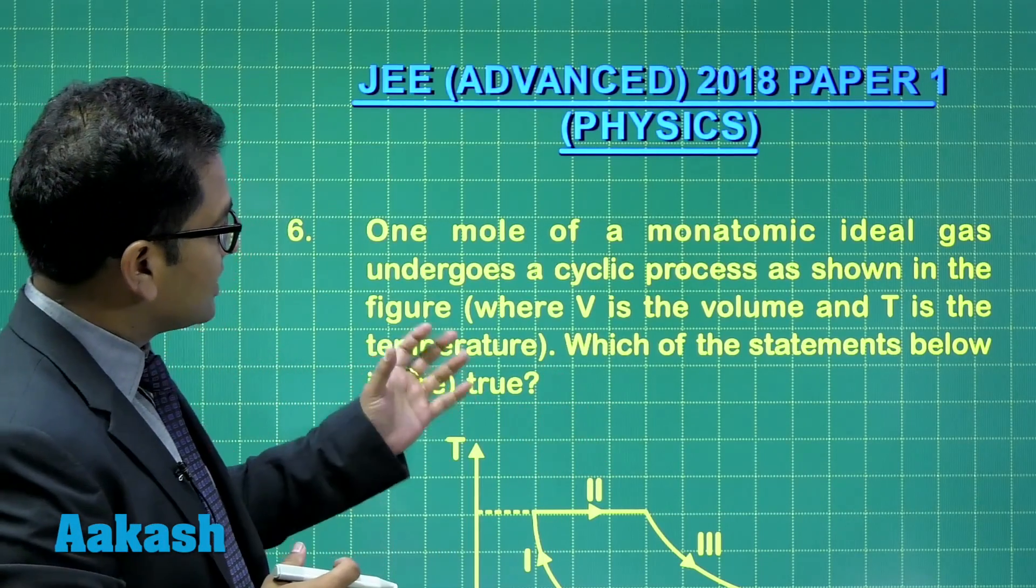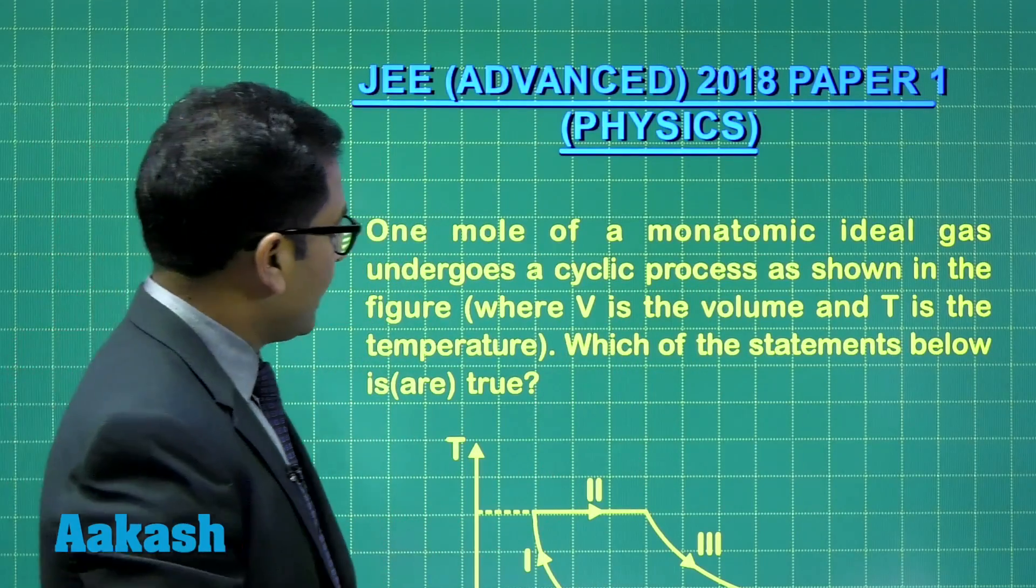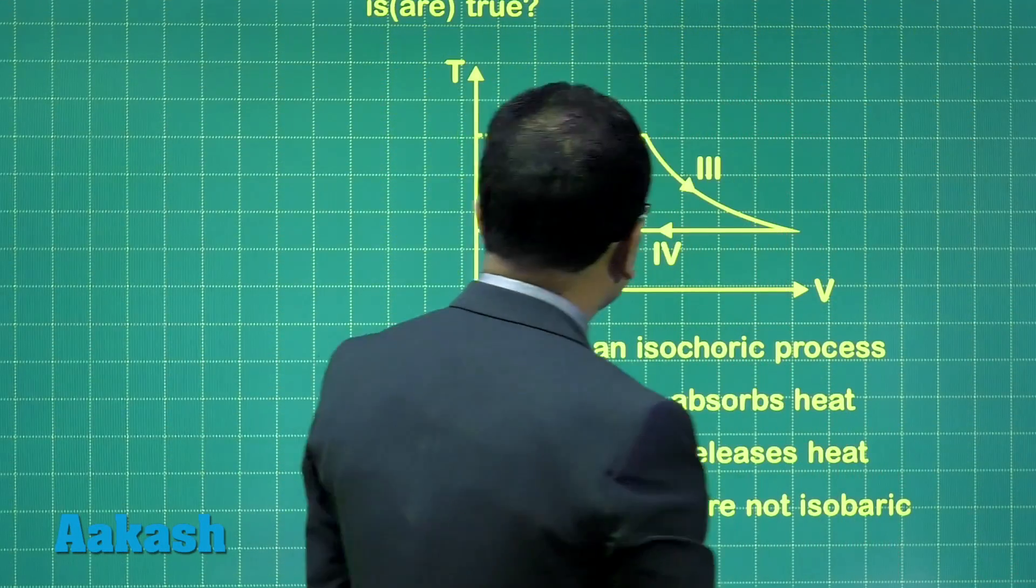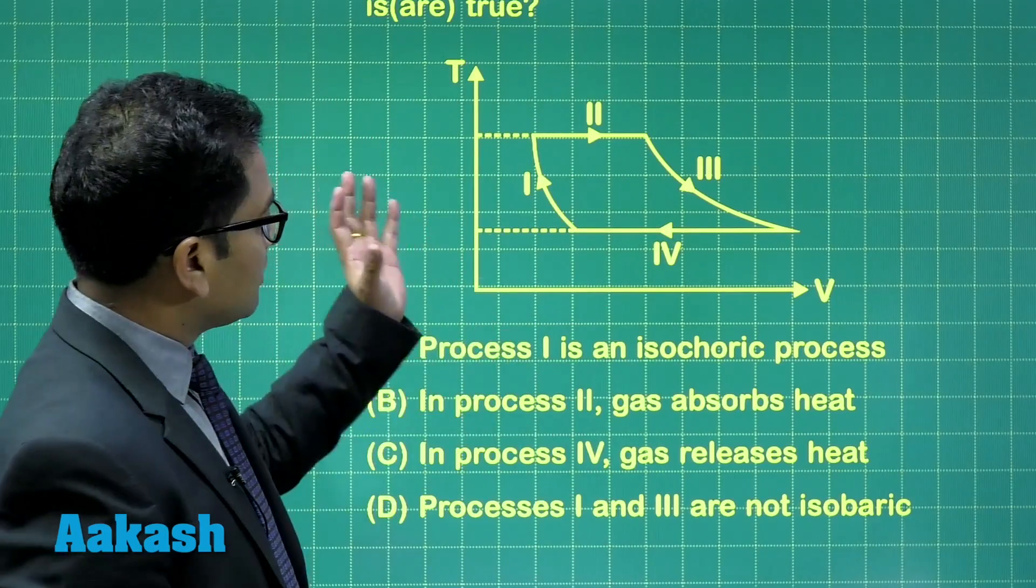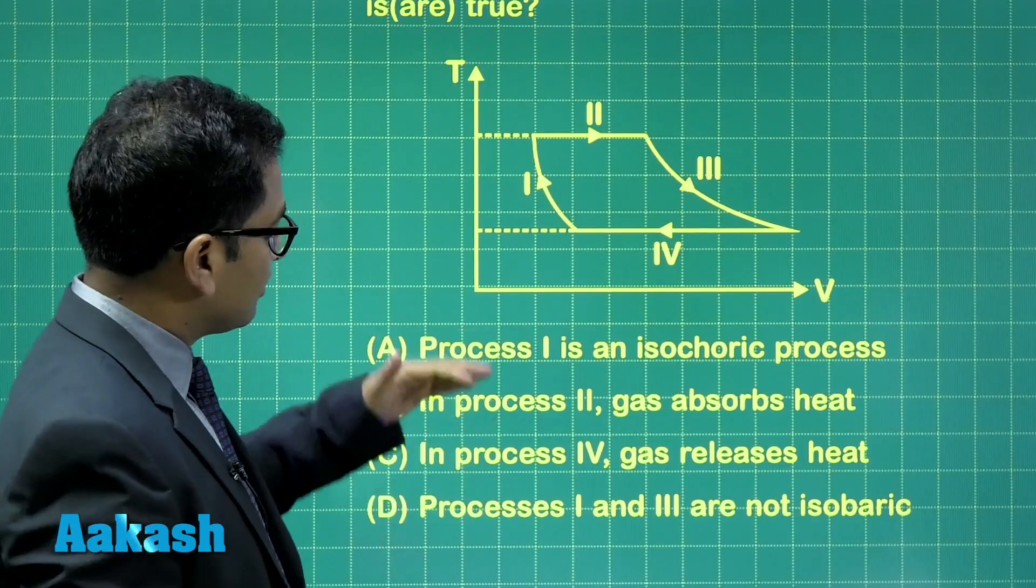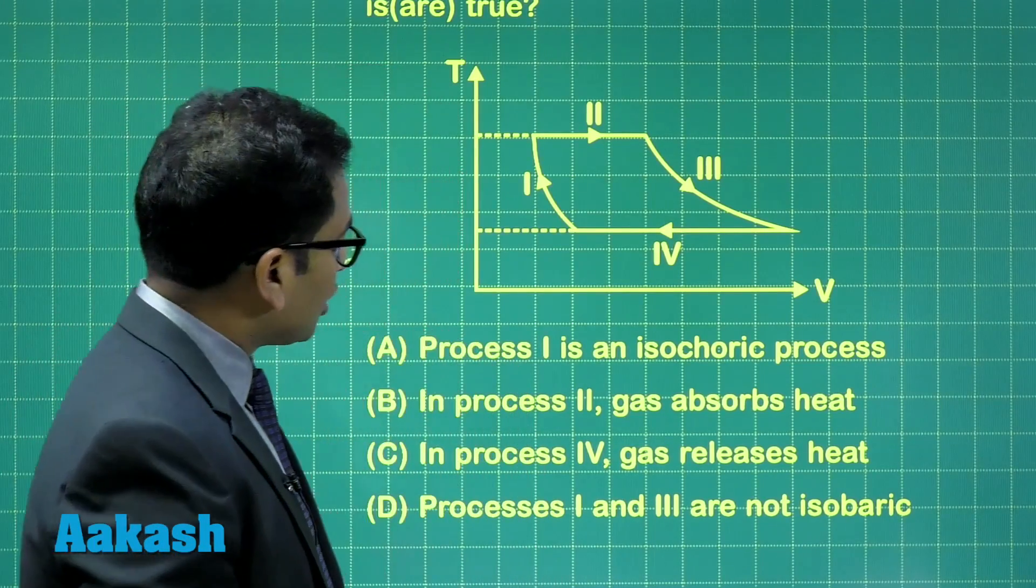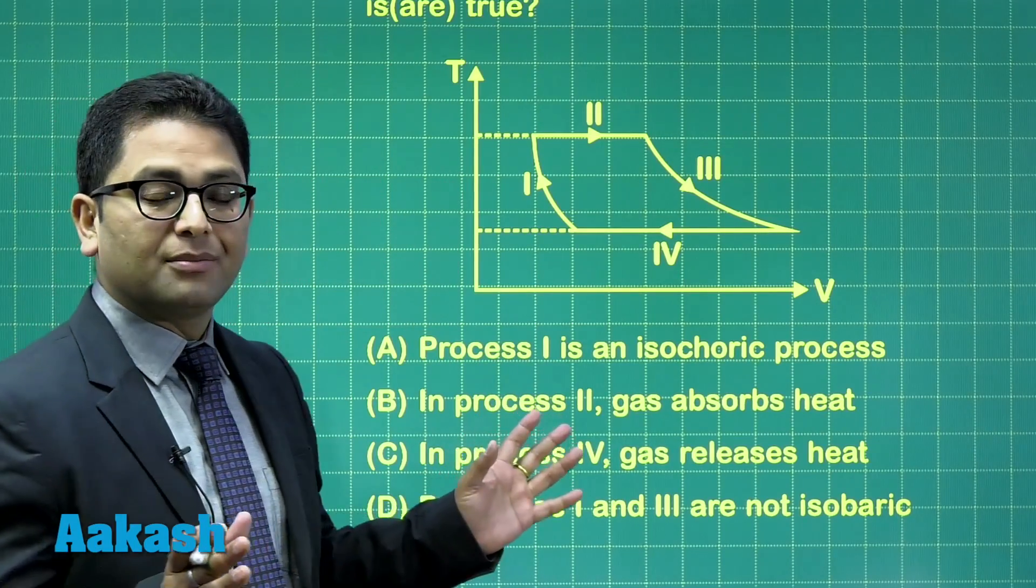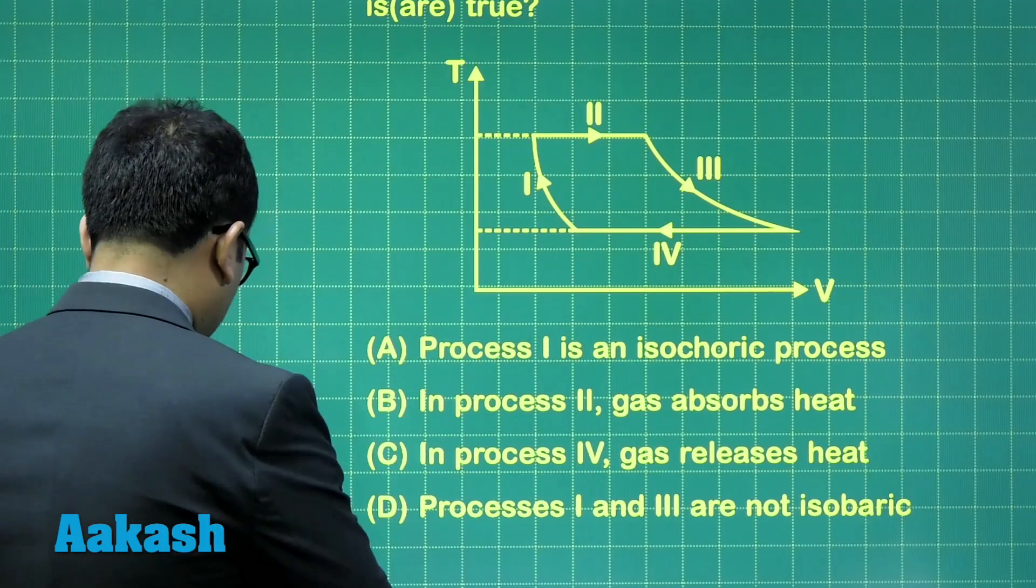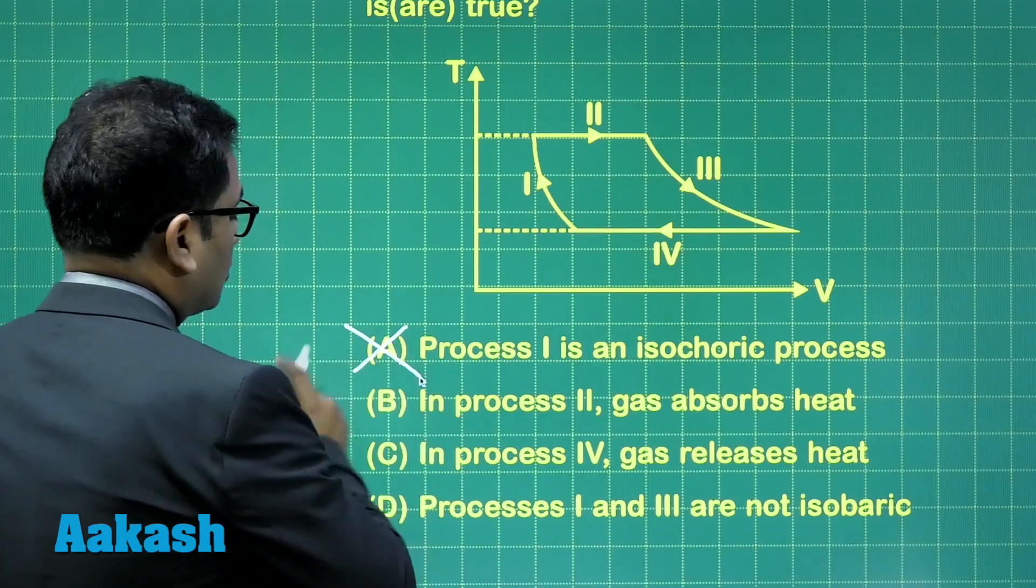One mole of a monoatomic ideal gas undergoes a cyclic process, and the graph for this ideal gas has been given as the TV graph. On the basis of this TV graph, we need to find which options are correct. Process one is an isochoric process - not at all, because in isochoric, volume has to be constant, and here the volume is changing. Therefore, option number one is ruled out.